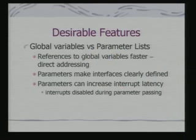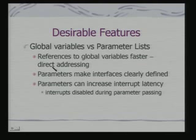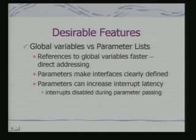Regarding global variables and parameter lists: references to global variables are faster because you can use direct addressing. But parameters make interfaces clearly defined. If you use only global variables, modifications can have side effects and introduce bugs, which is why global variables are generally avoided in software design. However, they provide the fastest mechanism for communication. If you are pressed for time deadlines, you may need to resort to global variables.